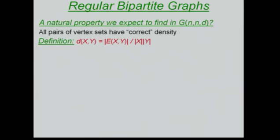So it's kind of like: if I pick two random vertices, one in X and one in Y, what is the probability that I will get an edge?